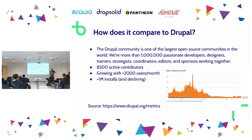Drupal is still growing with 2,000 new users every month, though the number of Drupal installs is decreasing while Mautic installs are increasing. The reason is that Drupal is moving more into the enterprise space, while Mautic is used in enterprise, lower enterprise, and small and medium businesses — especially because of its power to send emails.